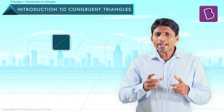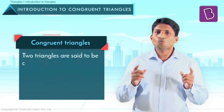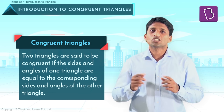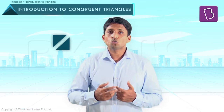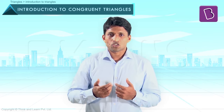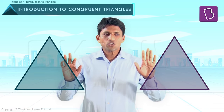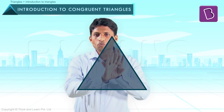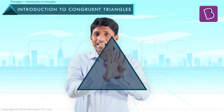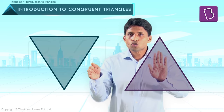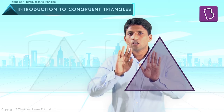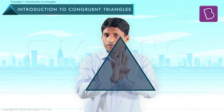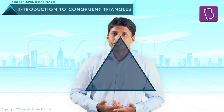Two triangles are congruent if the sides and angles of one triangle are equal to the corresponding sides and angles of the other triangle. Let's visualize this — take two congruent triangles ABC and PQR. If you place one on top of the other on the corresponding sides, they fit exactly. You can rotate them — they are congruent. You can flip them — they are congruent. You can also slide them, and they are still congruent, because in all these cases they are fitting exactly.